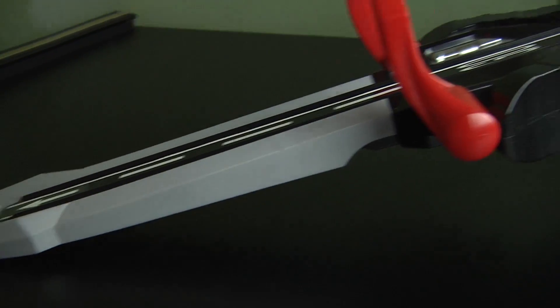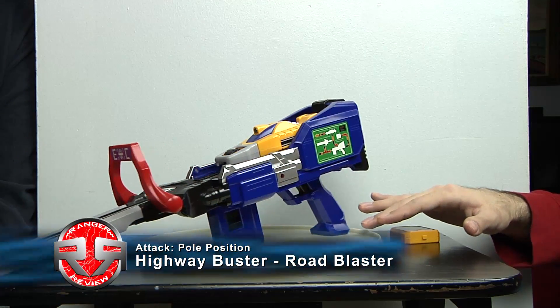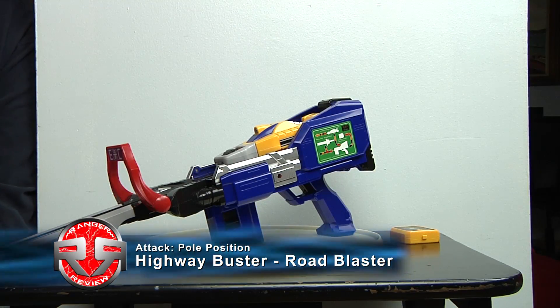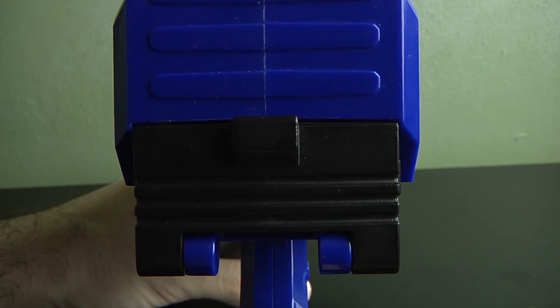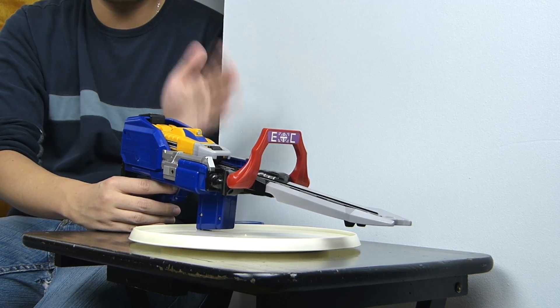So now you have the Road Blaster slash Highway Blaster. This is all three of them combined. In this mode in the show they actually shoot the Zip Charger out and it actually hits the enemies. Now you can still activate the engine souls. The toy itself has something really interesting, it has a safety lock so you can't really automatically shoot this thing out.